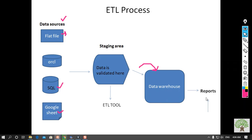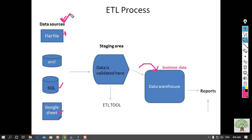Now we need to pass the data to generate reports. Up to this point, it is known as business data. What's happening is we are consuming all the raw data, then validating it, and after the data gets validated it is converted into business data.